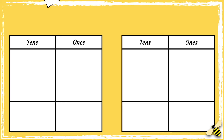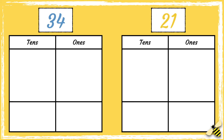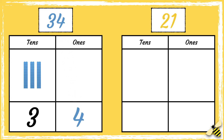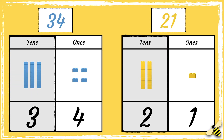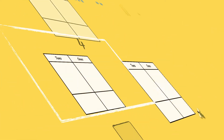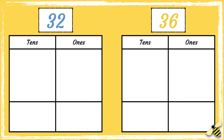Here are two numbers. Which number is greater? The number 34 has three tens and four ones. The number 21 has two tens and one one. When we compare numbers, we look at the left digit first, which is tens. Three tens is greater than two tens, so 34 is greater than 21.